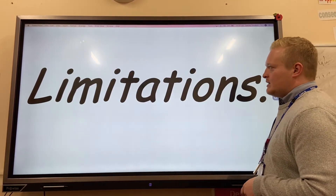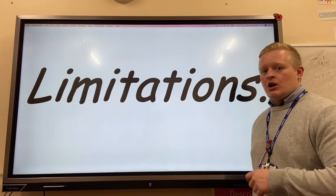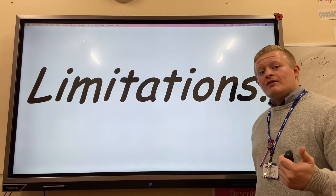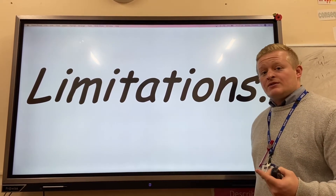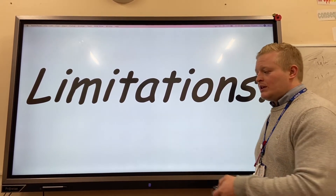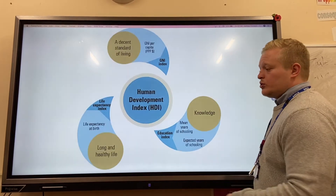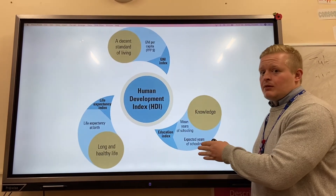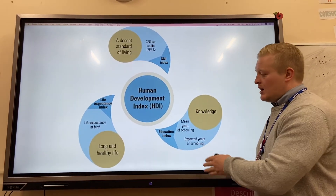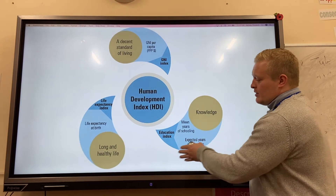There are limitations to all of these indicators — countries may lie about their data, and the data may be out of date. So we need something else to give us a true score about development, which is why we use the Human Development Index (HDI). This gives us a combined score.